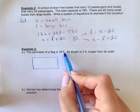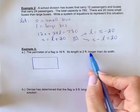Example three. The perimeter of a flag is 16 feet. Its length is two feet longer than its width.